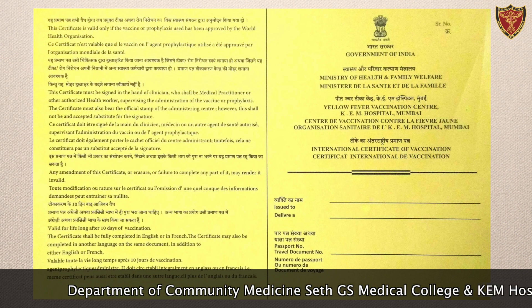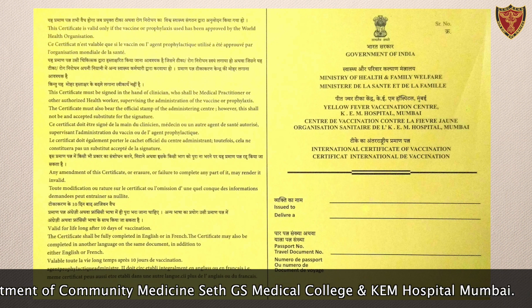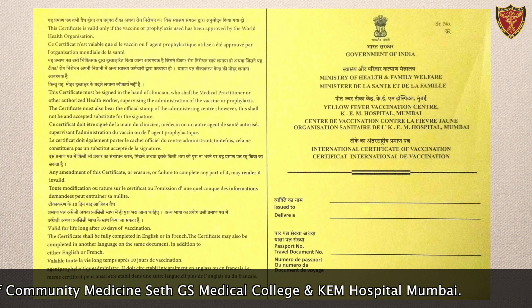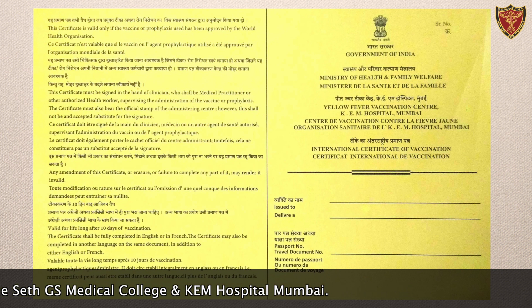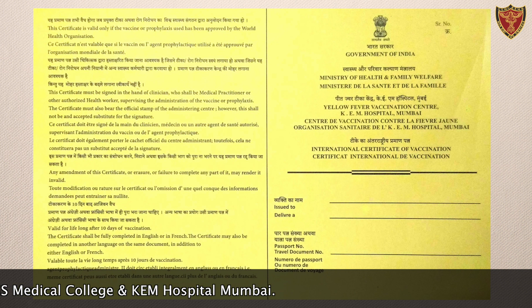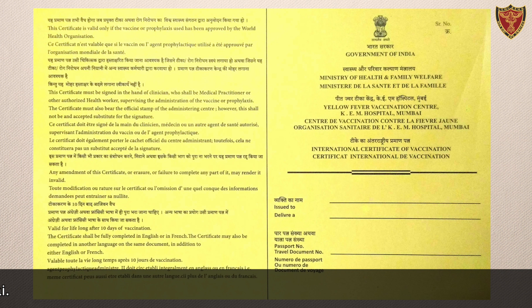After vaccination, the person pays the charges for vaccination, which are 300 rupees as per the Government of India charges. After that, the person is sent for a period of observation which is 30 minutes. This is the entire procedure of yellow fever vaccination wherein documents are filled, the vaccine is given, and 30 minutes of post-vaccination observation are conducted.